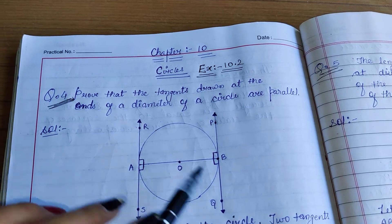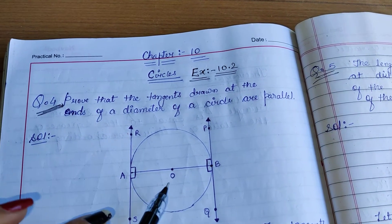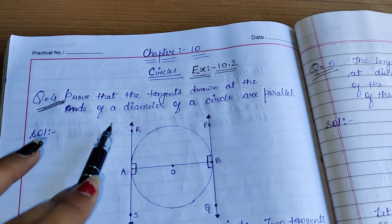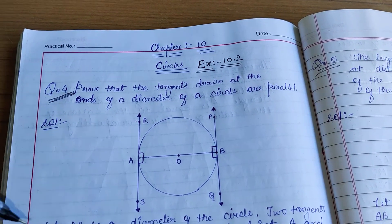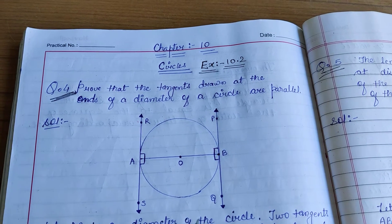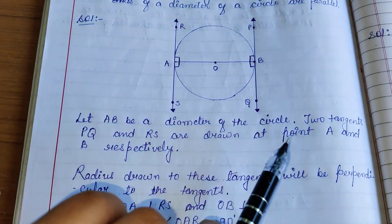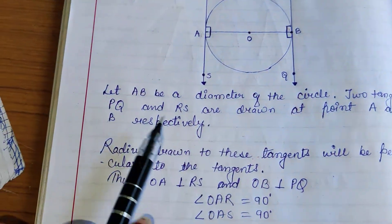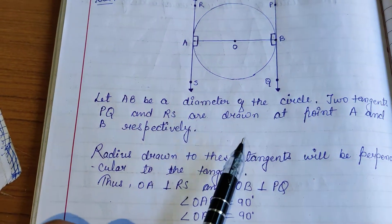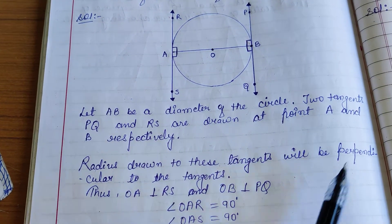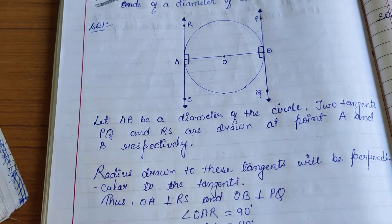First we draw the diagram. O is the center of the circle and let AB be the diameter of the circle. Two tangents PQ and RS are drawn from the points A and B respectively.